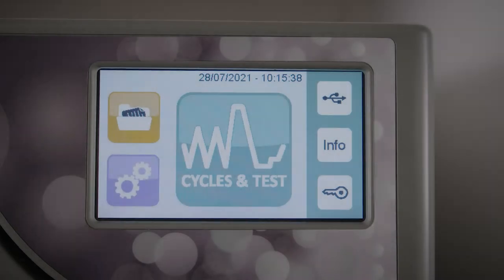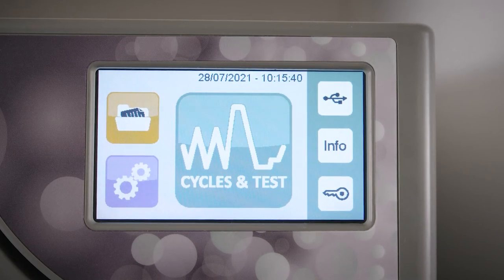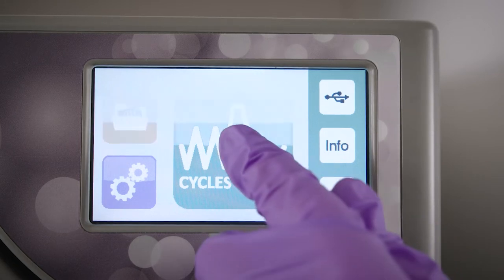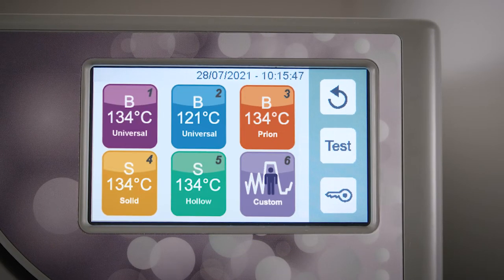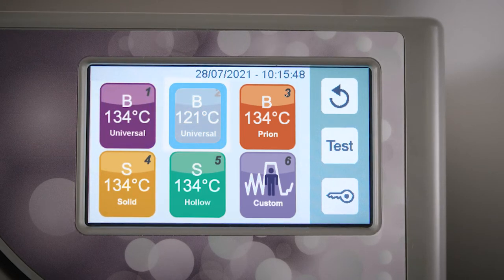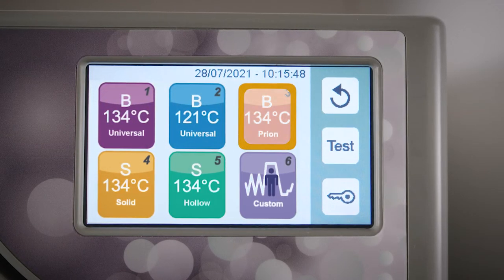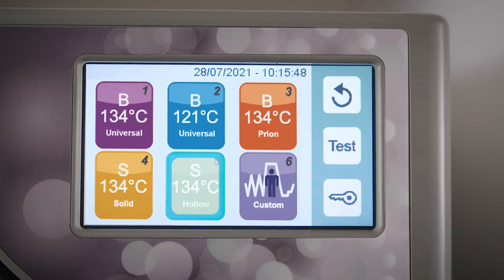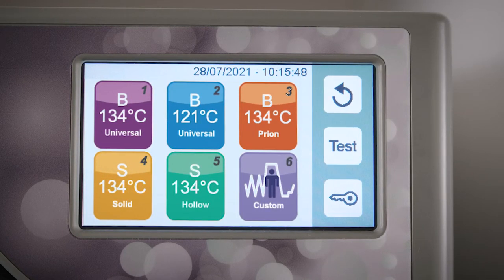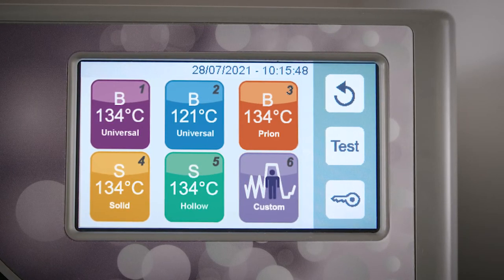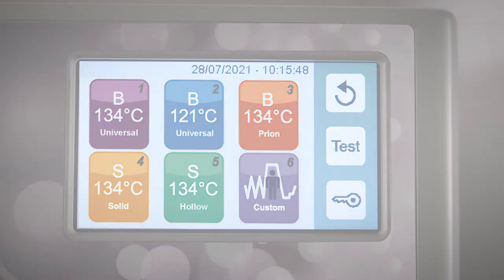The cycles and test icons give you access to the Bravo G4's sterilization and test cycles. The Bravo G4 offers five validated cycles including universal, universal rubber and plastics, extended, solid-wrapped, and hollow-unwrapped cycles. In addition, a user-defined custom cycle is available. Please consult the operator's manual for more information about the custom cycle.